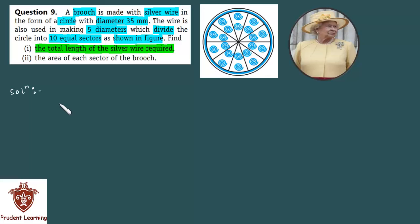Let us see the solution. In the first section we have to find the total length of the silver wire required. You have to know silver wire is used in the circumference and five diameters. So you have to write: this is equal to circumference of circle plus five diameters.